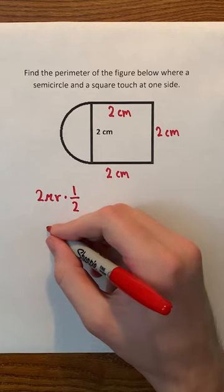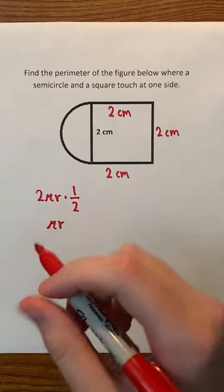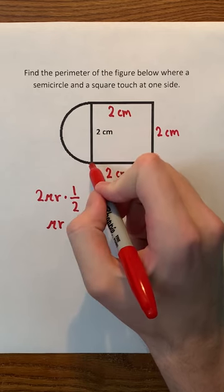2 times 1/2 is just 1, so we end up with πr. r is the radius, and 2 centimeters would be the diameter of the full circle.